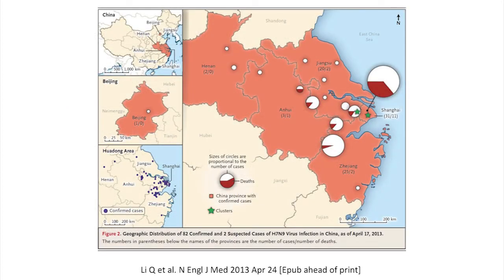A study of 82 confirmed cases showed that the virus had spread beyond the original emergence area, with cases reaching as far north as Beijing. Pie charts for each location show the proportion of deaths — for many locations, mortality was a relatively small proportion, suggesting lower mortality than H5N1. About two-thirds of the 82 cases had visited a live poultry market, and about three-quarters had some direct exposure to chickens.